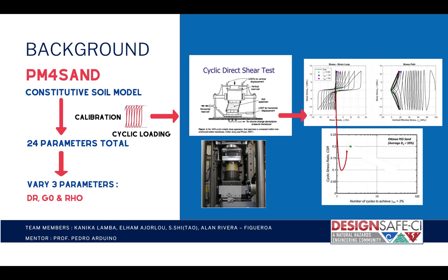For the calibration, we are using experimental data from six cyclic simple shear tests performed on Ottawa sand F65 material. The relative density for these tests ranges from 54 to 65 percent. The cyclic simple shear test simulates earthquake conditions on sand samples by applying cyclic loads. From CSS tests we can plot hysteresis loops of shear stress versus shear strain, and shear stress versus vertical effective stress. These tests also give the cyclic stress ratio (CSR) and the corresponding number of cycles to achieve liquefaction for a given sand sample at a given relative density.